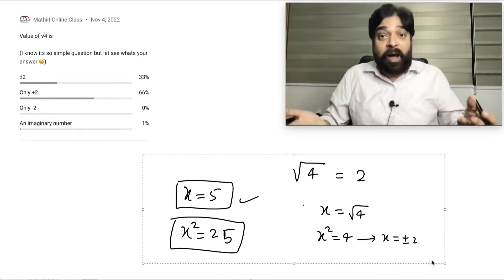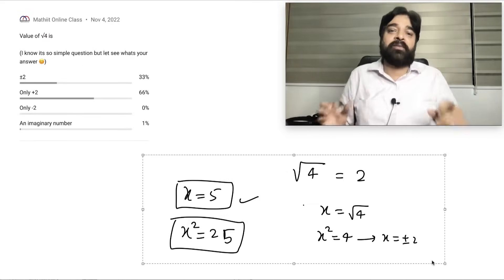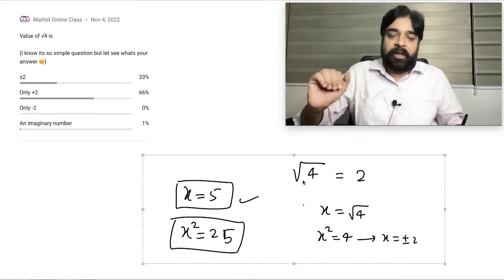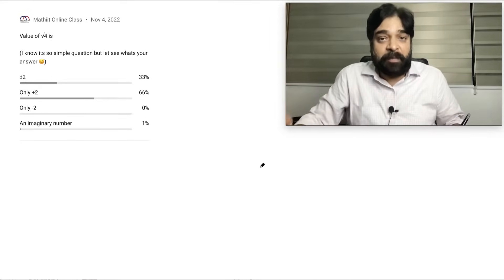So remember in mathematics squaring is not allowed. If you do squaring it is on your own risk. What is the risk? One extra answer will come. So square root of 4 is always plus 2. It is not plus minus 2.